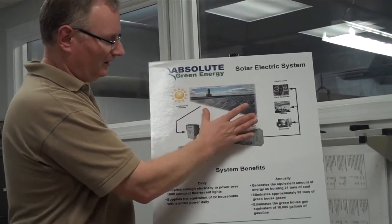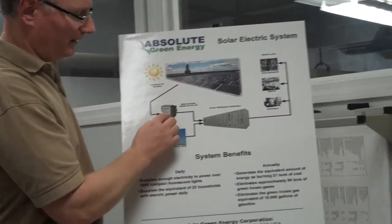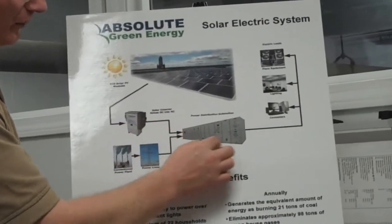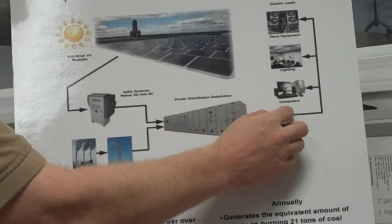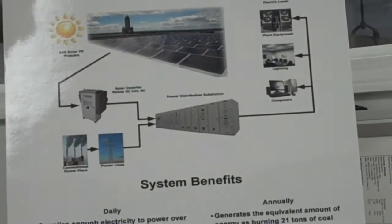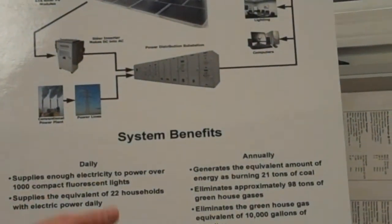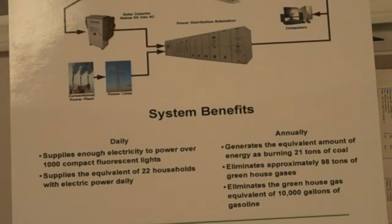So long and short: DC modules get inverted, they go through your power distribution, and they can get used in a variety of electrical loads like computers, lighting, and plant equipment.